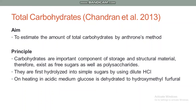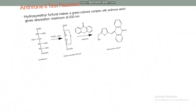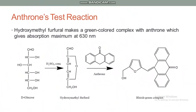The principle of this method is that carbohydrates are important components of storage and structural material. Therefore, they exist as free sugar as well as in the form of polysaccharides in our sample. They are first hydrolyzed into simple sugar by using dilute hydrochloric acid. On heating in acidic medium, glucose is dehydrated to hydroxymethyl furfural. During the Anthrone test, hydroxymethyl furfural makes a green colored complex with Anthrone, which gives absorption maximum at 630 nanometers. Anthrone is actually anthracene with a ketone group, and this is an aromatic ketone.